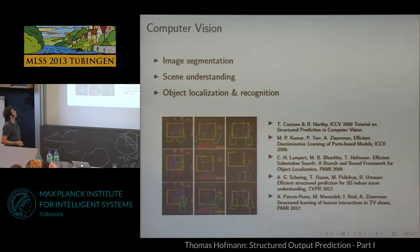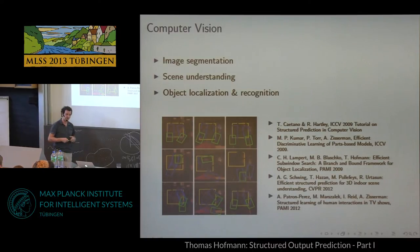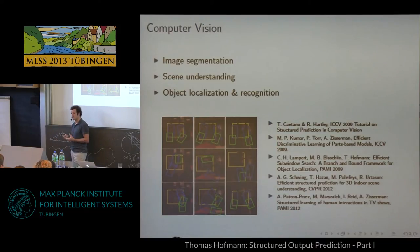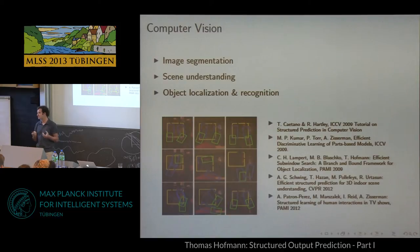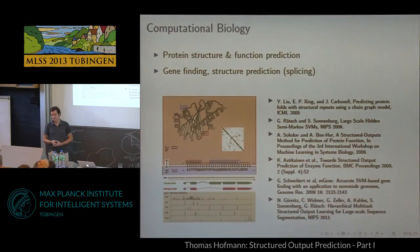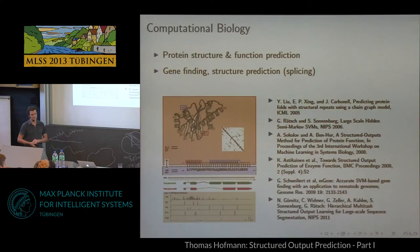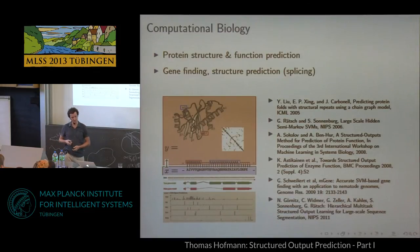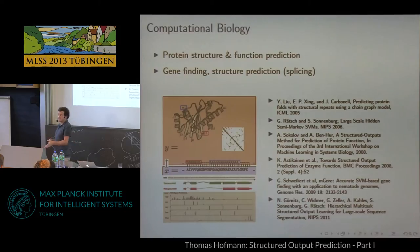In computer vision, things like image segmentation very naturally involve multiple label variables to jointly predict. Scene understanding requires modelling dependencies between objects and where they appear. In computational biology, these methods have been used for function prediction, protein structure prediction, and gene finding and splicing. Gunnar Rätsch, who has been at Tübingen for a large part of his career, has been very active in that area. So that's just motivation — if you work in some of these application areas, you may have already run across these problems.